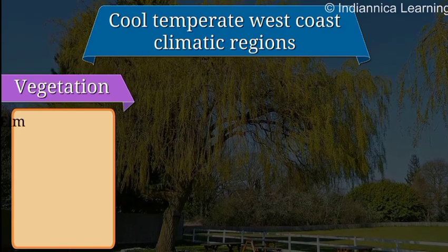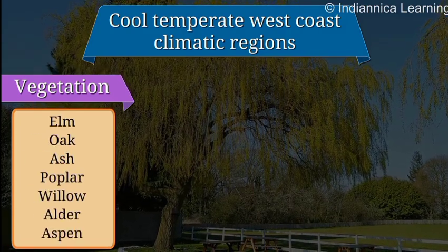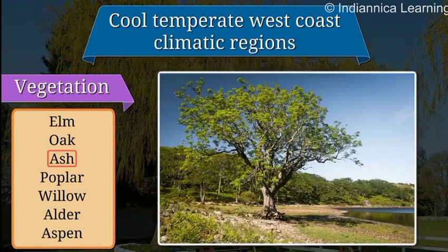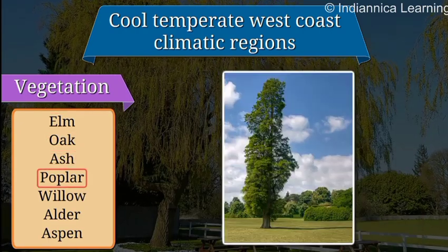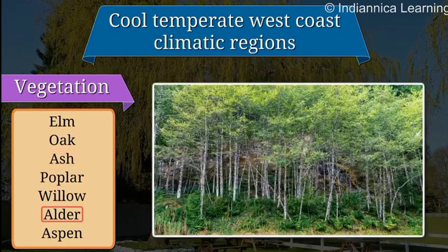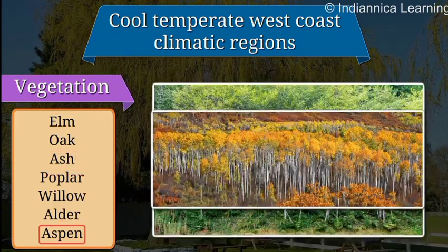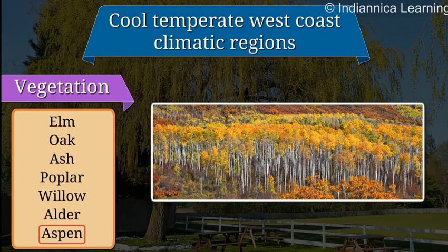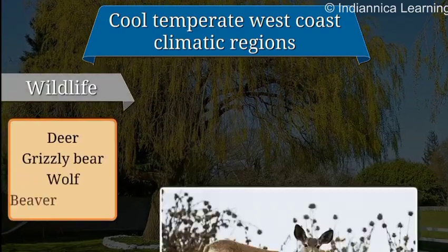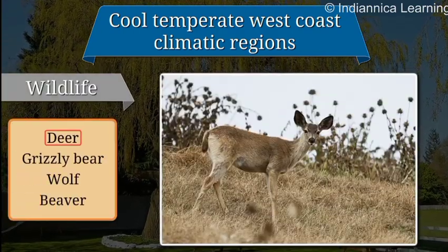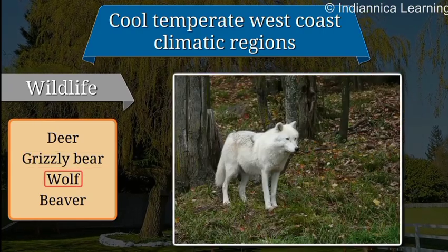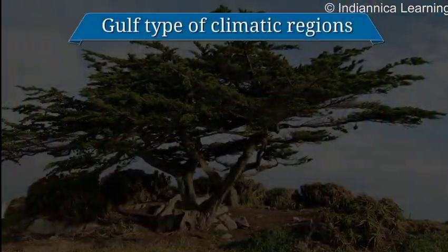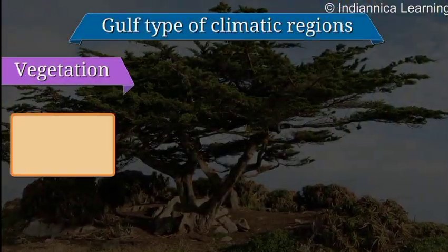Cool temperate West Coast: The regions with the cool temperate West Coast type of climate consist of tree species such as elm, oak, ash, and poplar. Willow, alder, and aspen are also found in the moist areas. The wildlife here includes the deer, grizzly bear, wolf, and beaver.